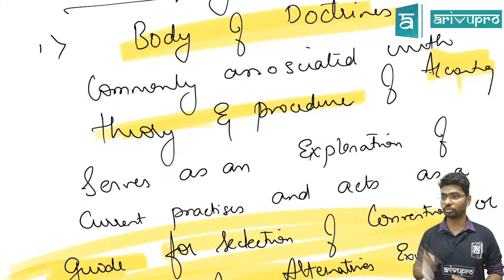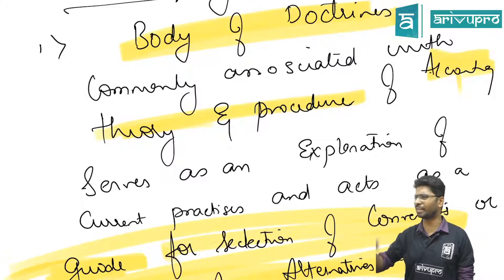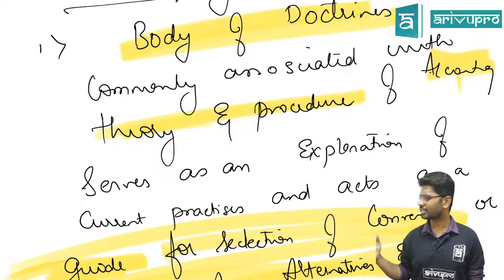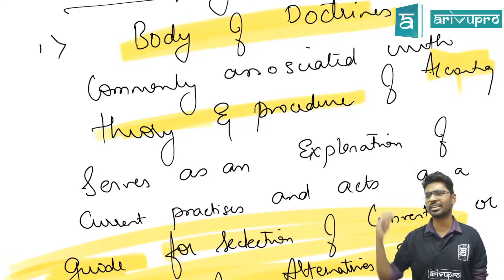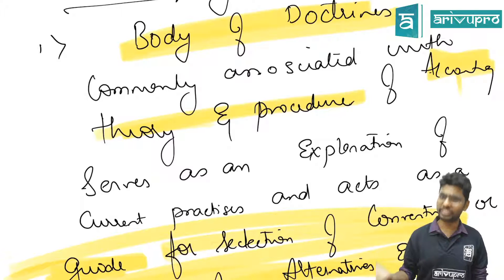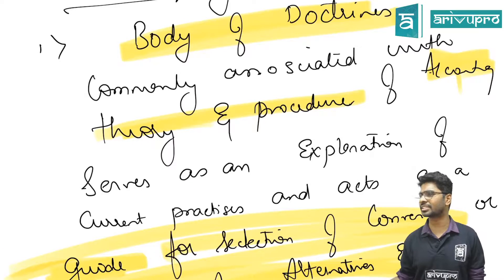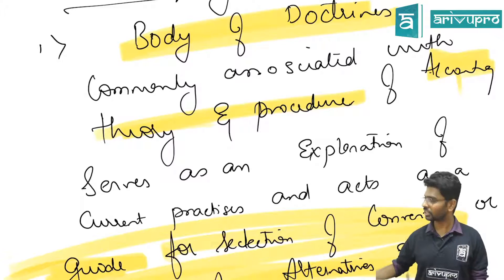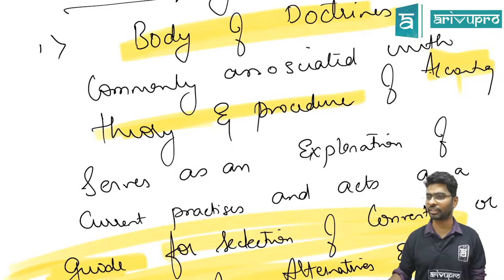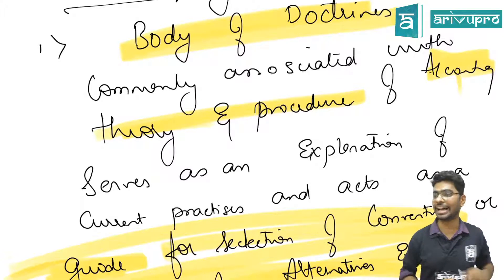Even in the exam, if you can relate a few key words, don't mug up the definition — just write in your own words. For example: accounting principles is concerned with a body of doctrines which gives the theory and practice of accounting, and also gives an explanation wherever alternatives exist, acting as a guide. Write in your own words — you'll still get your marks. Remember keywords rather than memorizing verbatim.